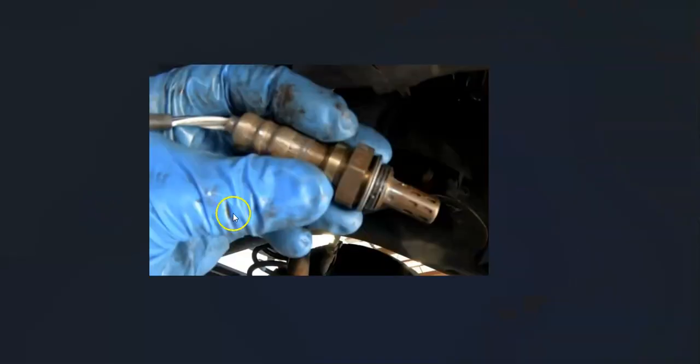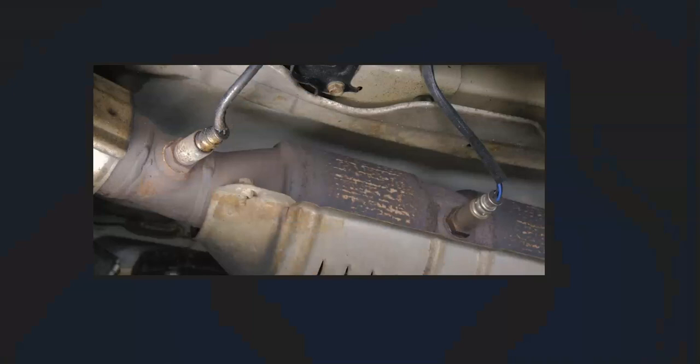And so the first thing to do when you get this code is to go locate the bank one sensor one oxygen sensor. There can be multiple sensors. It really can vary depending on the year of the Kia, but quite commonly there's two. But keep in mind, there can be more. And what's going on with these is you'll have one before the catalytic converter, called the upstream or sensor one, and you'll have one after the catalytic converter, called sensor two or the downstream oxygen sensor.